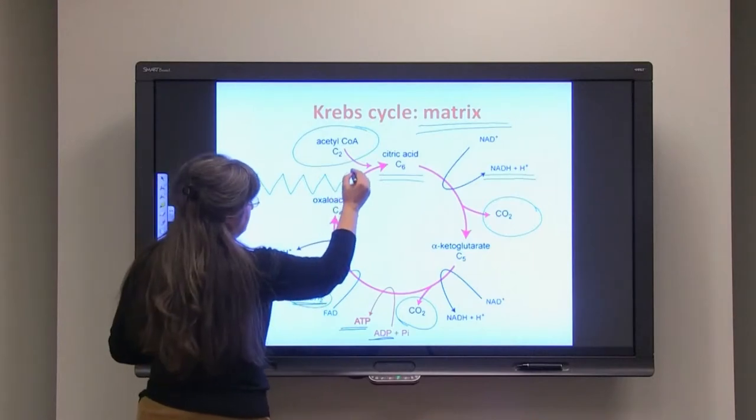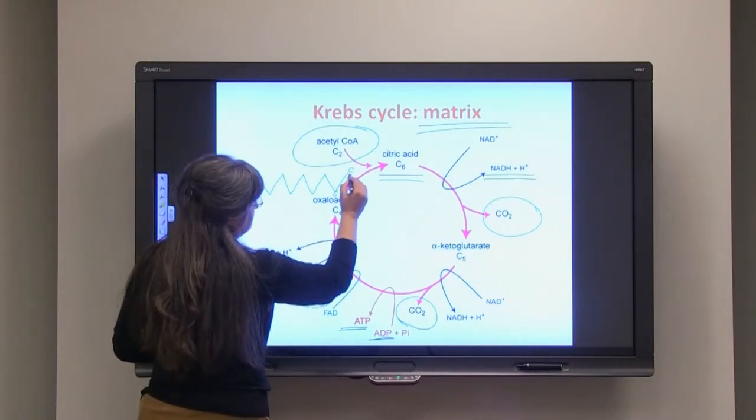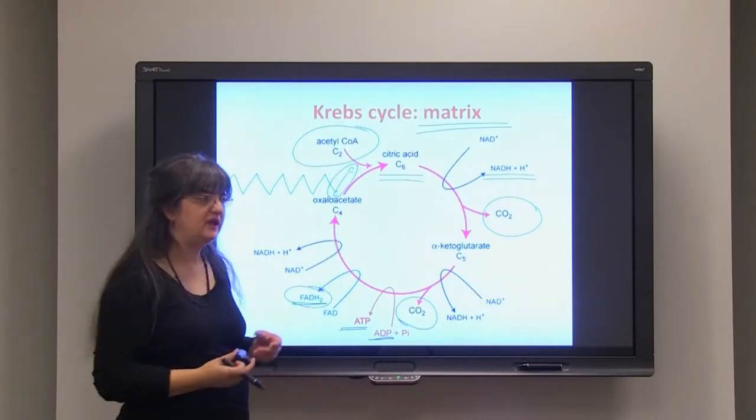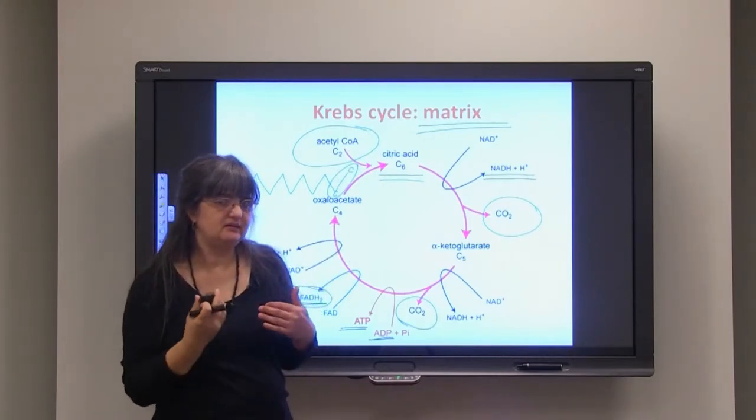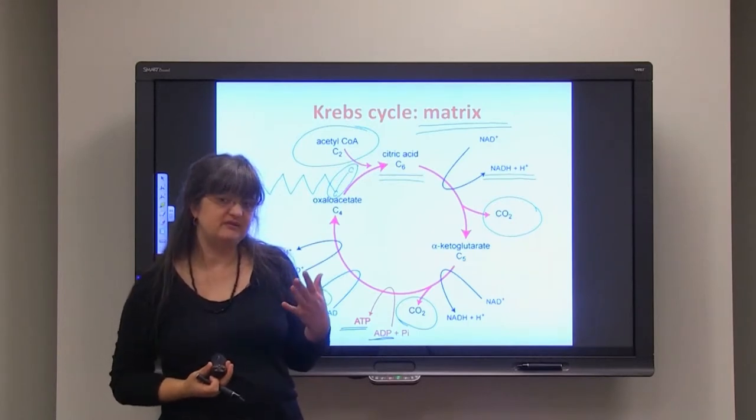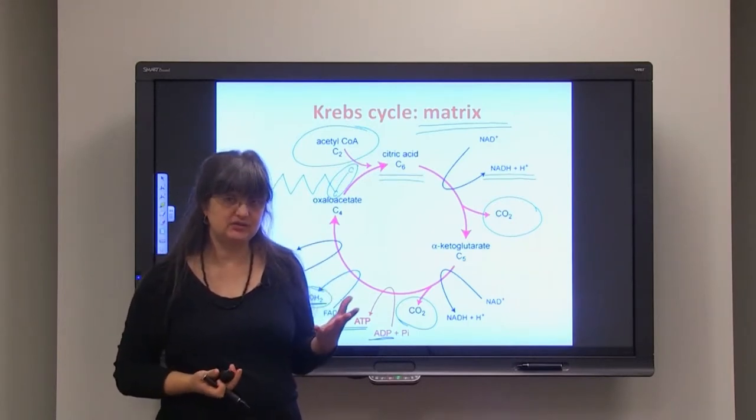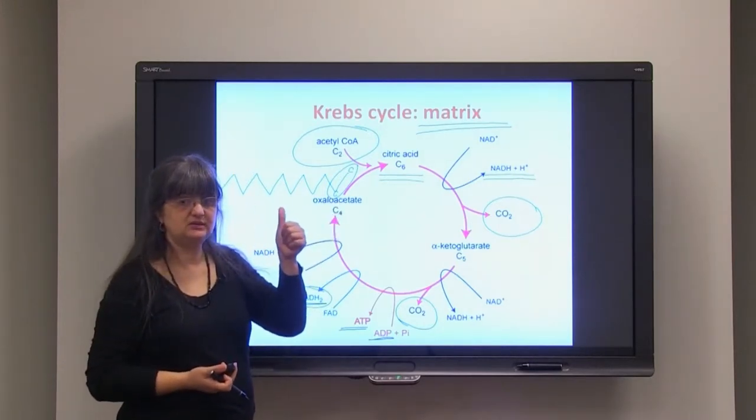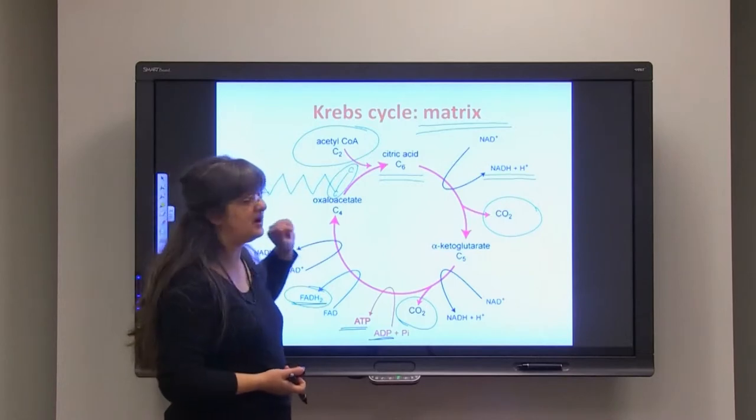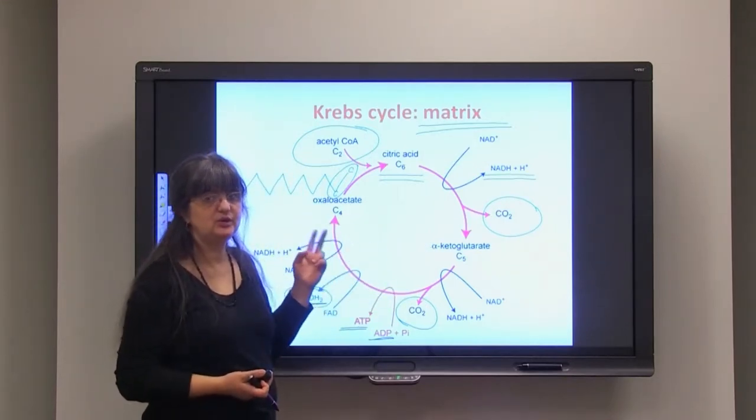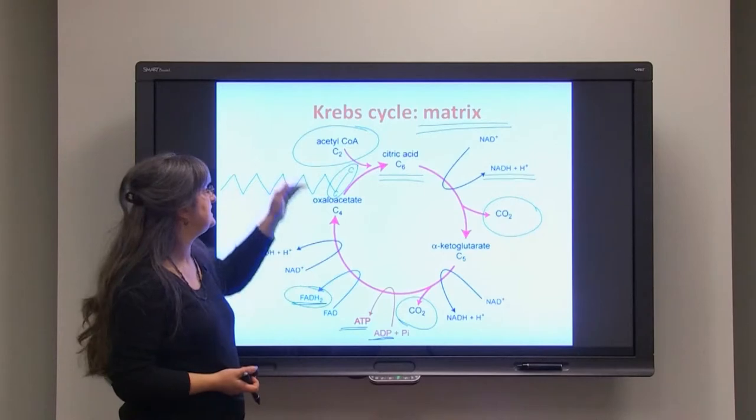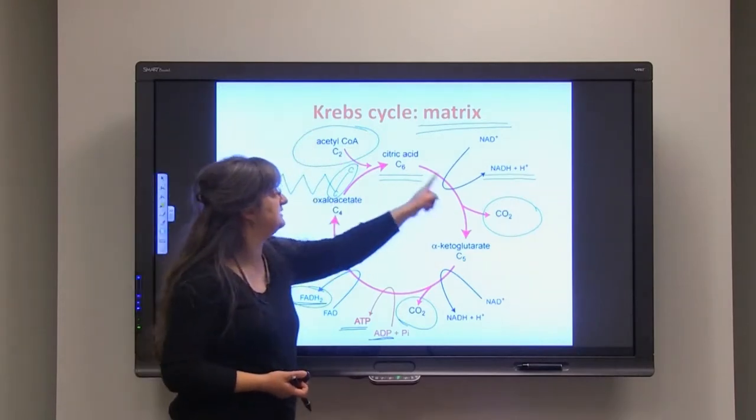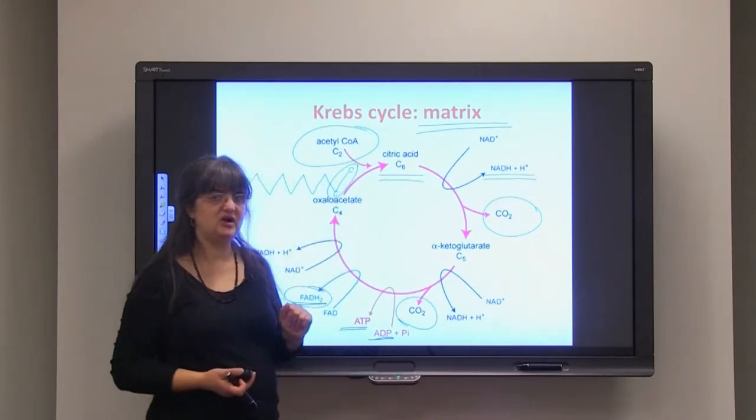And every time, two are entering the Krebs cycle. So that's why lipids, especially fats, are actually energy storage because there's tremendous amount of energy captured in one molecule. From glucose, we have two Krebs cycle entries through the two pyruvates entering as acetyl coenzyme A into the cycle.